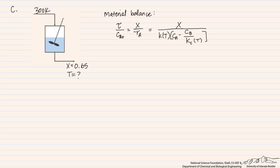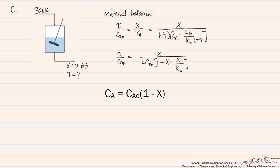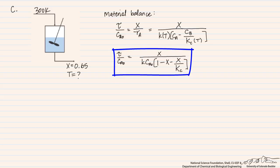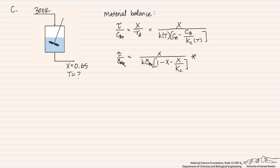The next step is to relate concentration to conversion. The concentration of A equals C_A0·(1−x), and the concentration of B equals C_A0·x. Substituting into the rate expression and collecting terms gives a key equation — with the C_A0 canceling — where lowercase k and capital K are both functions of temperature. Since there are temperature-dependent terms, it's important to know the reactor temperature for the new case where we have 65% conversion.